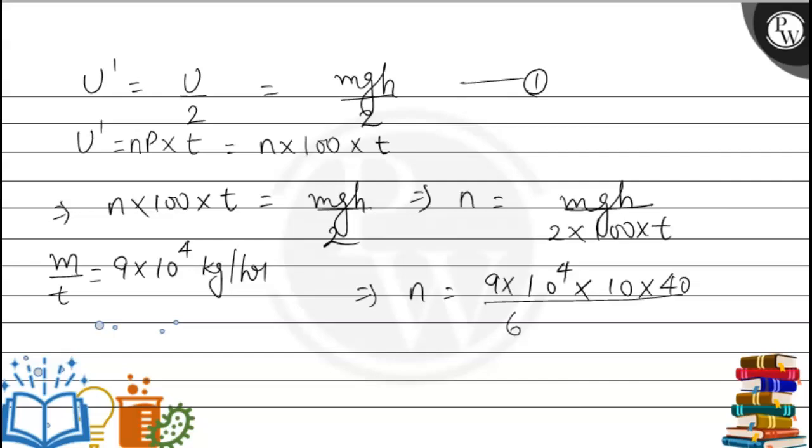We convert it into seconds. Solving this value, we will get 50. So the number of lamps becomes equal to 50.